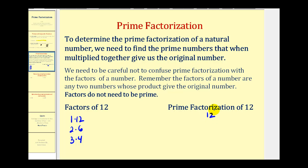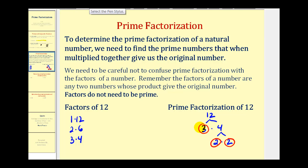We start by breaking down twelve into any of its two factors — let's say three times four. Three is prime, so we'll go ahead and circle that. Four is not prime, so we'll continue to break down four into additional factors until all factors are prime. We can write four as two times two. Two is prime, so now we have found the prime factorization of twelve: two times two times three, or we could write this as two squared times three.